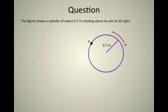Imagine you were looking straight down on the top of a drum or a cylinder that was rotating at an angular velocity of 10 radians per second. If the drum head has a radius of 0.7 meters,